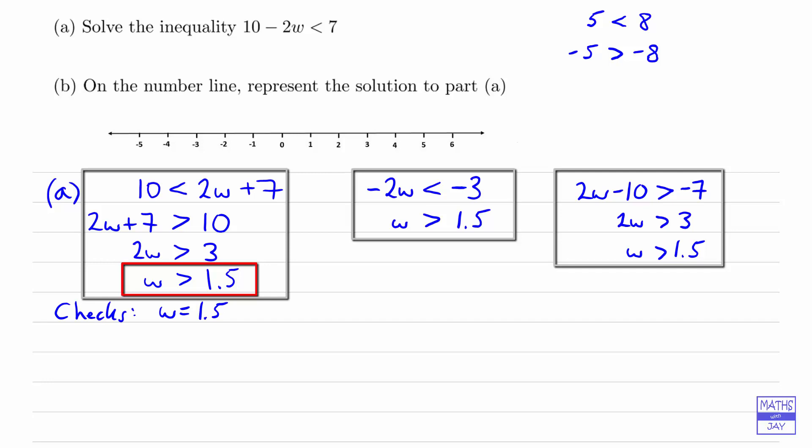In other words, we're checking what happens when w is actually equal to 1.5. So when w is equal to 1.5, 10 minus 2 times w is 10 minus 2 times 1.5. That's equal to 7. So that's what we want.